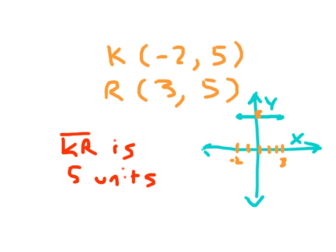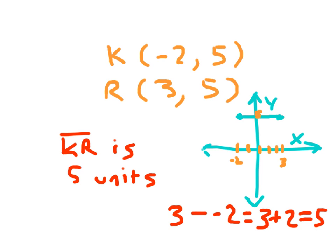Technically, you can do the same algebraic steps: 3 minus negative 2. Subtracting a negative is the same as adding, so that's 3 plus 2, which equals 5. There's always more than one way to solve a problem. Line segment KR is 5 units long because we're counting how far away negative 2 was from 3, since the x-coordinates are the ones that varied.